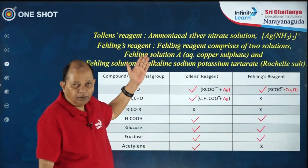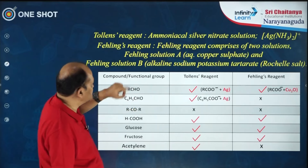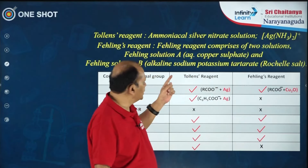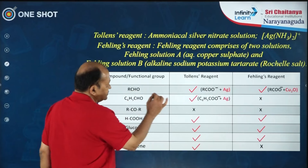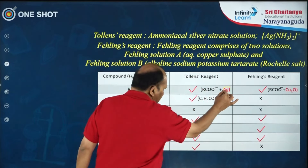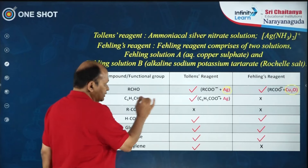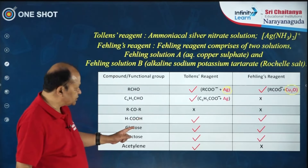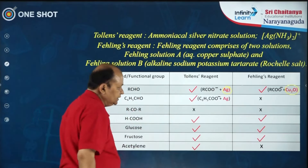Every student should know this. Tollens' reagent is ammoniacal silver nitrate, and Fehling's reagent is a mixture of two solutions: Fehling's A (aqueous copper sulphate) and Fehling's B (alkaline solution of sodium potassium tartrate — the Rochelle salt). This table is very important: aldehydes respond to both Tollens' test and Fehling's test. In the Tollens' test, metallic silver is deposited; with Fehling's reagent, a red precipitate of copper oxide is formed. Benzaldehyde gives the Tollens' test but not the Fehling's test. Ketones give neither test.